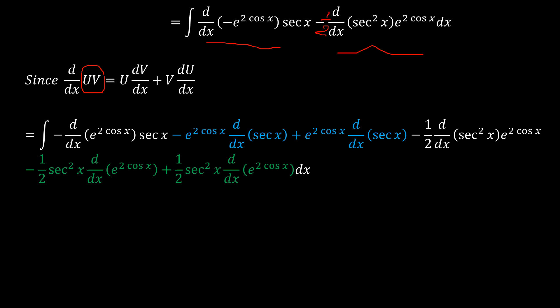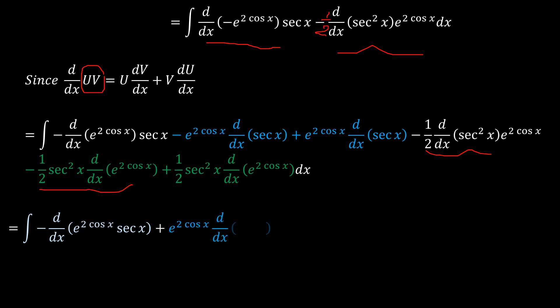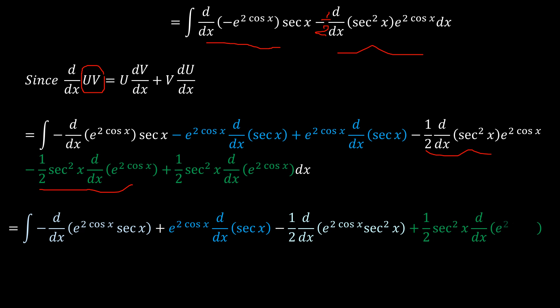So this and this cancel out, taking us back. However, we can have this and this interact, giving a scenario with negative the derivative of e^(cos x) times sec(x). The second part remains, and similarly we have half times the derivative of e^(cos x) times sec²(x), and this last part remains.